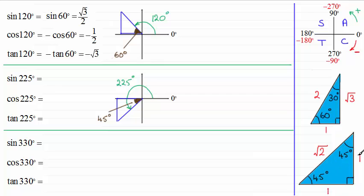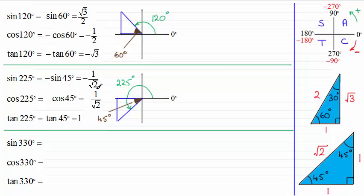The tangent of 45 degrees, opposite over adjacent, is 1 over 1 which is 1. So the answers are: sine of 225 equals minus sine 45, which is minus 1 over root 2; cosine of 225 equals minus 1 over root 2; and tan of 225 equals 1. Hopefully you were able to get those correct. Now let's look at the last block: 330 degrees.